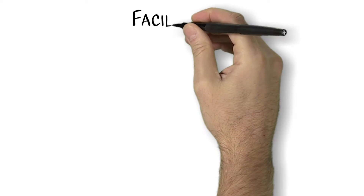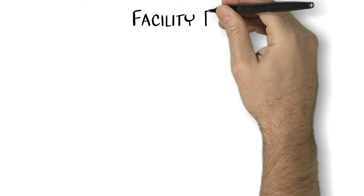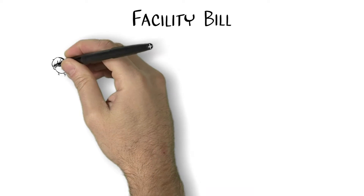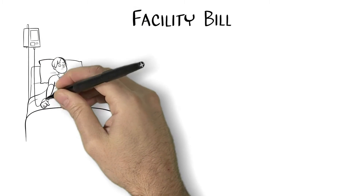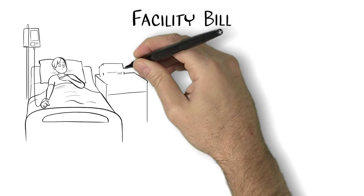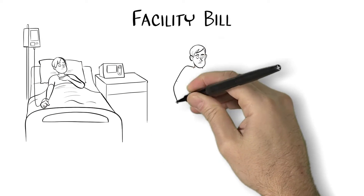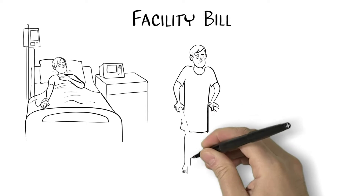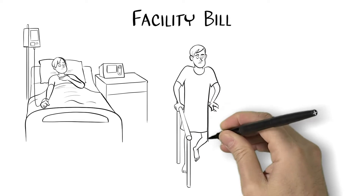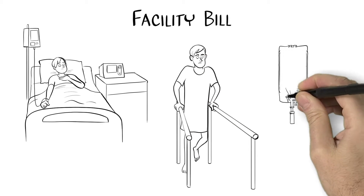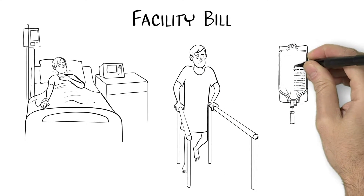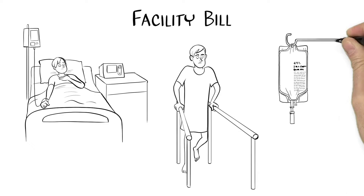If you go to an emergency room or are hospitalized, you may receive a facility bill, often called a hospital bill. This type of bill includes charges for services you received, such as surgery, physical therapy, laboratory services, or medications.